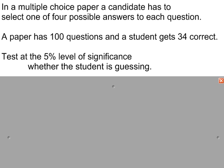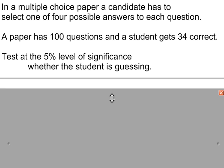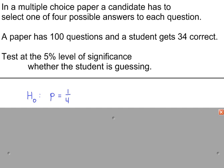If the student is guessing, then the proportion answered correctly should be a quarter. So H₀, the null hypothesis, the population proportion is a quarter. And if the student is not guessing, then the proportion should be greater than a quarter.